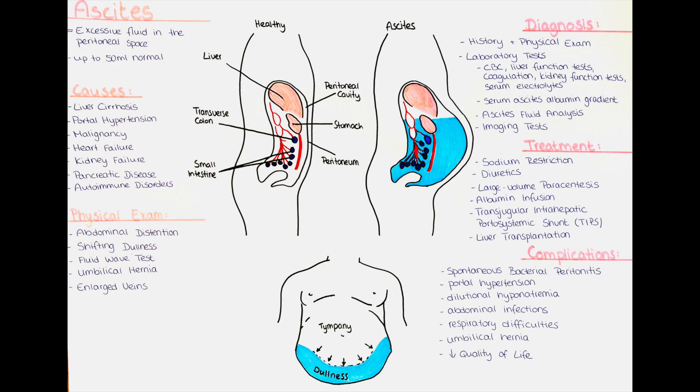Diuretic medications, such as spironolactone and furosemide, are commonly used to increase urine output and promote fluid elimination from the body. These medications are often prescribed in combination and should be carefully monitored to achieve the desired diuretic effect without causing electrolyte imbalance or kidney dysfunction.